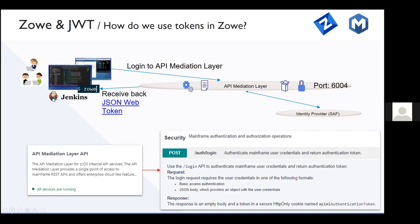Authorization is handled by SAF security profiles, which is the most secure thing to do on the mainframe today. When it comes to revocation, the lifecycle of the token is managed by the provider, and there are options in the gateway to log out the user. In terms of identity federation, Zoe does not address that just yet, but there is potential to ensure federation across security domains — meaning RACF, TSS, and ACF2.